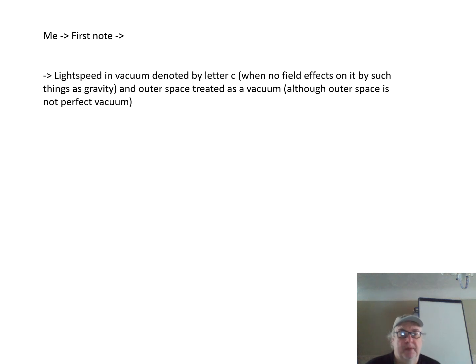The first thing to note is the letter c. It means light speed in vacuum, and by vacuum it means there's no effects on it such as from gravity, and treating outer space as a vacuum, although it's not a perfect vacuum.